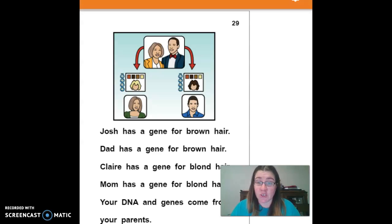Josh has a gene for brown hair. Dad has a gene for brown hair. Claire has a gene for blonde hair. Mom has a gene for blonde hair. Your DNA and genes come from your parents.